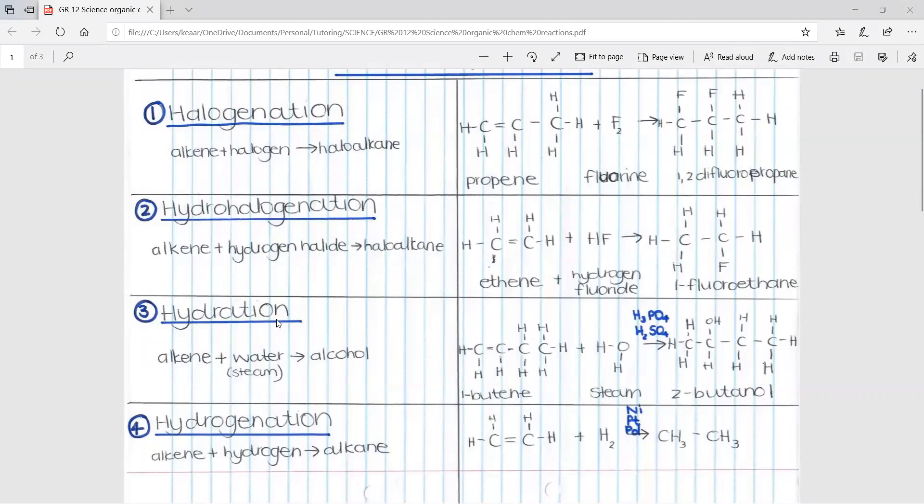For number three, we have hydration. This is when you take an alkene and you add water in the form of steam to form an alcohol. Here is an example. We have one butene where the double bond is in the first carbon and we add water. This OH and H join onto the two carbons that had the double bond to form 2-butanol. There must be a strong acid catalyst. In this example, you can either have sulfuric acid or phosphoric acid and the water again must be in the form of steam and there must be excess of the steam.